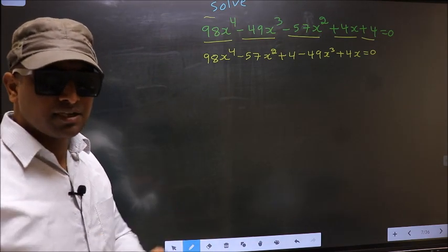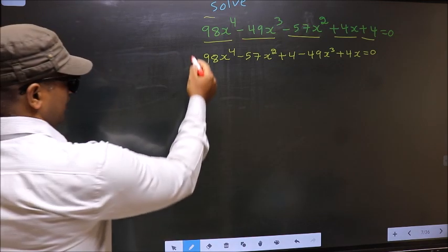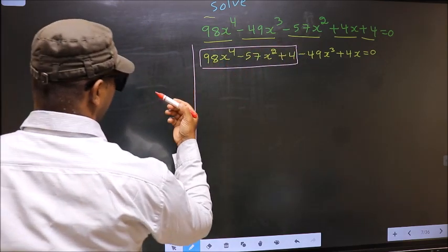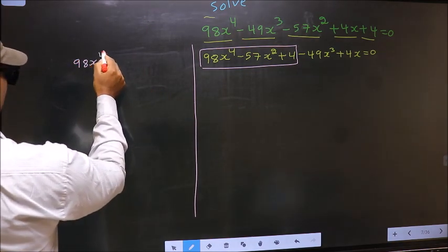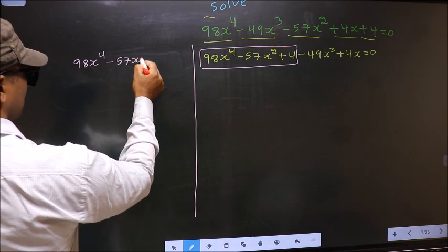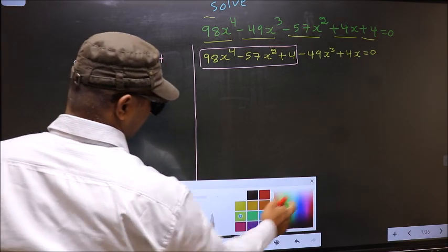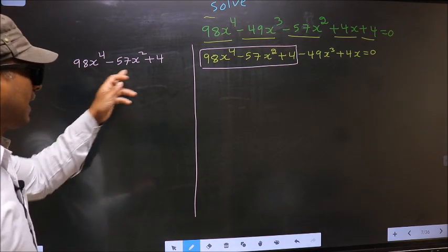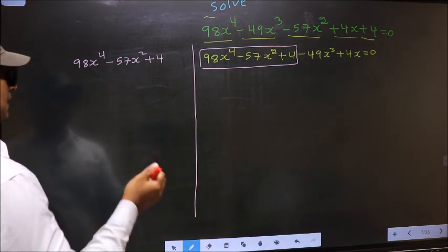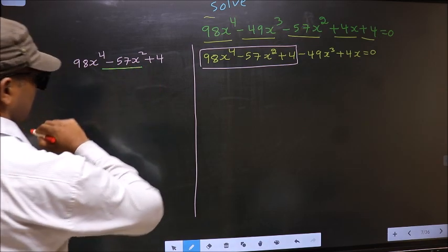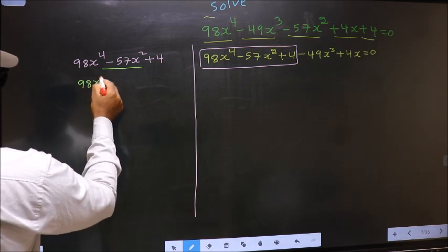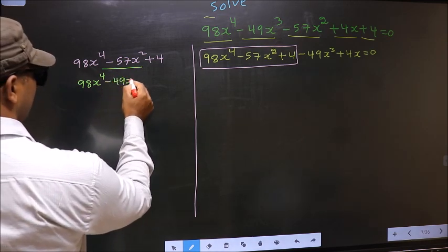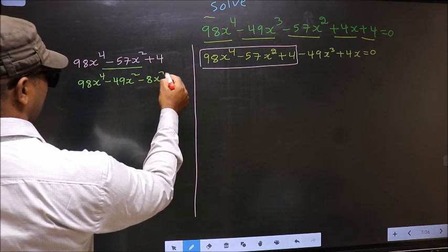The reason for rearranging terms is that now we can factorize the first 3 terms — that is 98x⁴ minus 57x² plus 4. We factorize this the same way as a quadratic, by splitting the middle term which is minus 57x². So in place of minus 57x² we write minus 49x² minus 8x² plus 4.